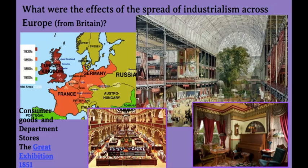Consumers — people — were able to consume more things. Life got better for a large number of people, and some of the first department stores were created to sell those objects that made people's lives nicer. Homes had more carpets, more curtains, more chairs. People were able to purchase more musical instruments, dishes, cups, forks, spoons. Things that used to be luxury items — lamps, clocks, books — became less expensive and a greater number of people were able to purchase them.